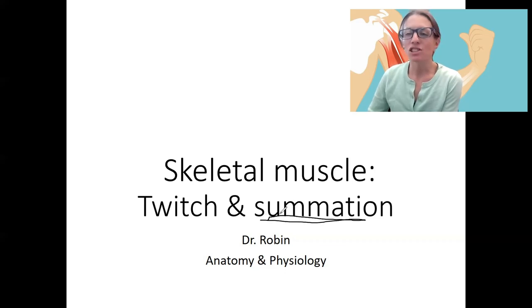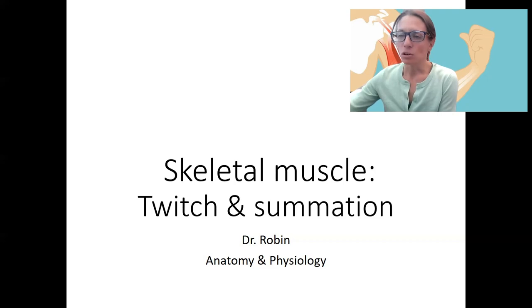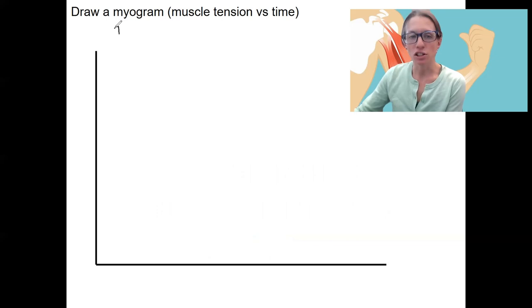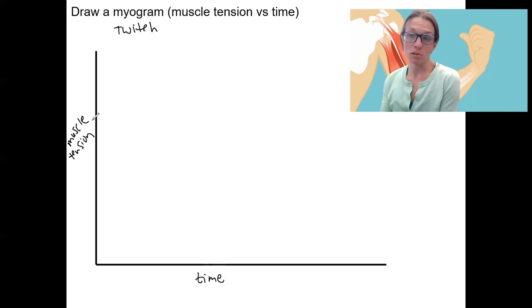And that's not really allowing you to do much. We need to have these summate, sum together to allow for continuous and meaningful, helpful movement. So before we go into summation, we need to look at how we can graph muscle tension. So we're actually first going to draw a twitch and we're going to draw it on a myogram, which is over time, the changes in muscle tension. Muscle tension is what we produce from those contractions that we've talked about.